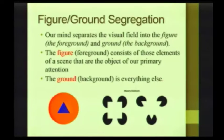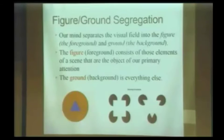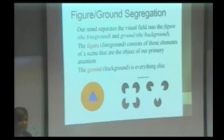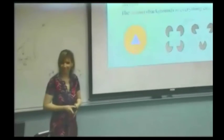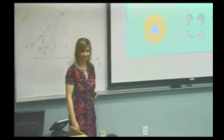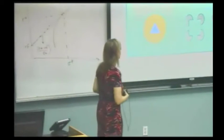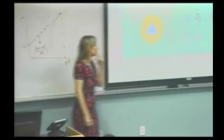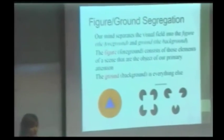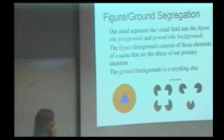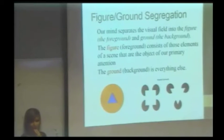Here's a very simple example: I'm standing up here, you are watching me give you a lecture. What is the figure? Me. What's the ground? Everything else — this wall behind me, this table. That's the background. Now, what do you see here? A triangle and a circle. Which would you say is the figure? The triangle. So the circle, in that case, becomes the background.